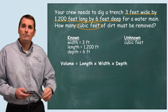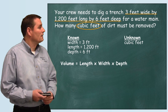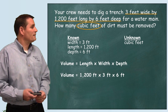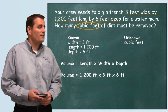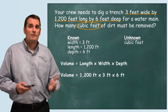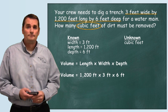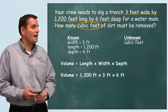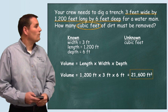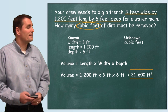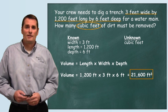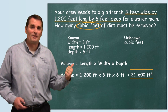Now that we have that, we can plug our numbers in and do the math. So we'll plug in our length of 1,200 feet, our width of three feet, and our depth of six feet. And now it just becomes a simple multiplication problem. So 1,200 feet times 3 feet times 6 feet equals 21,600 cubic feet. And that, my friend, is how this problem is solved.